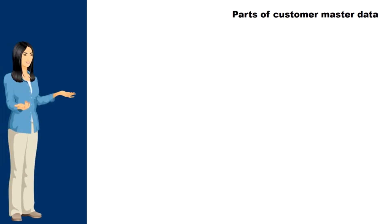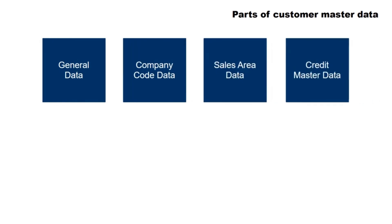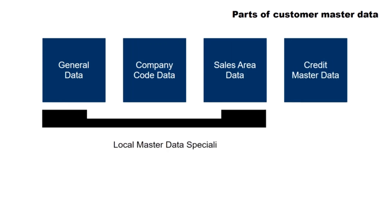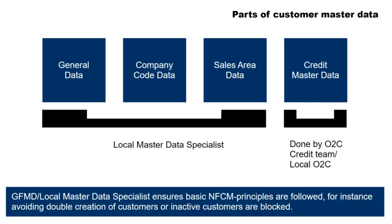In the SAP system, the following parts of customer master data can be distinguished: general data, company code data, sales area data, and credit master data. General data, company code data, and sales area data creation or change is done by the local master data specialist. Credit master data creation and change is done by the O2C credit team or local O2C team. The local master data specialist ensures basic NFCM principles are followed, for instance avoiding double creation of customers, and inactive customers are blocked.